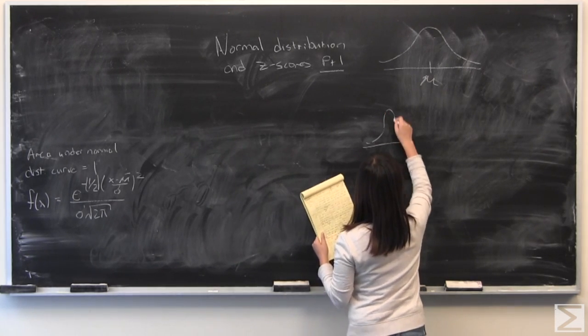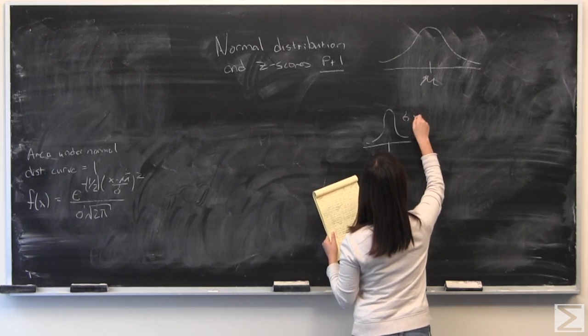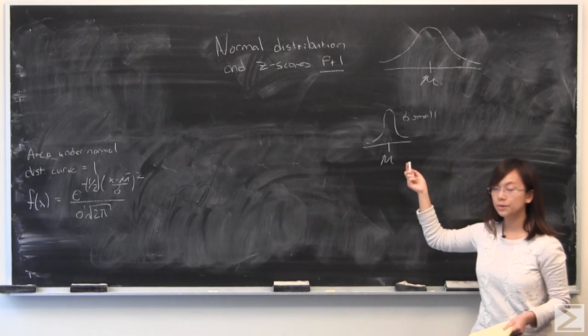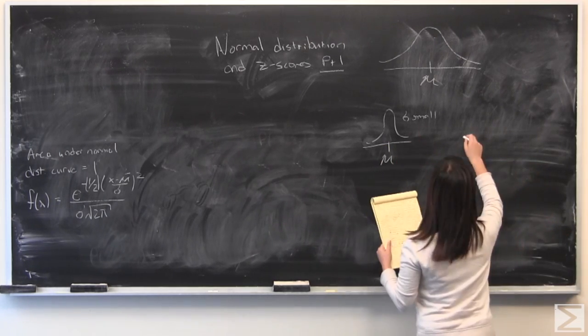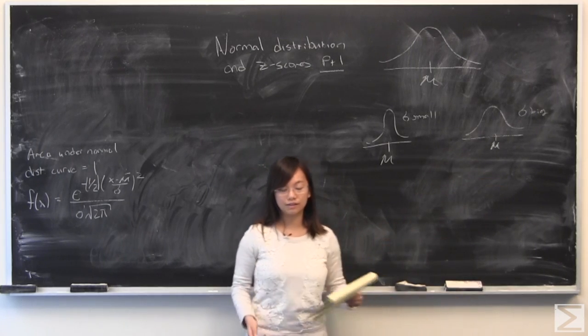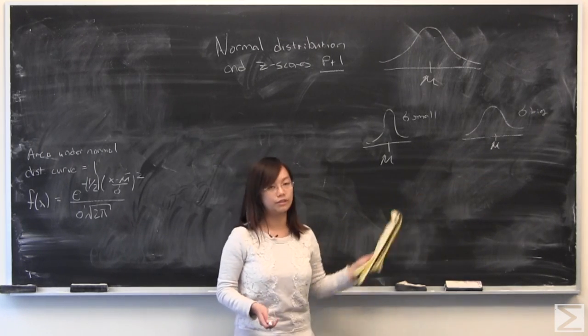But if you have a small standard deviation, then your normal distribution curve is going to be really narrow. If you have a big standard deviation, you're going to have a very broad spread of values, because they vary from the mean a lot.